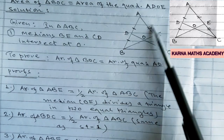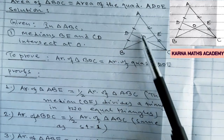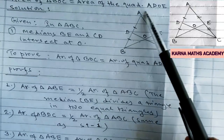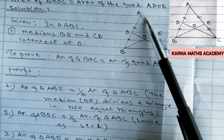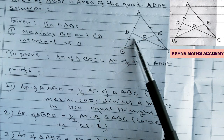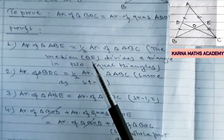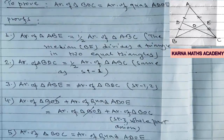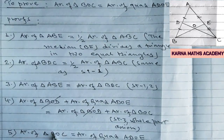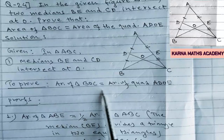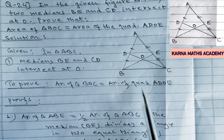Triangle ABE and triangle BDC both contain the common triangle BOD, so we cancel triangle BOD from both sides. In statement number 5, we get: area of triangle BOC is equal to area of quadrilateral ADOE. This is proved.